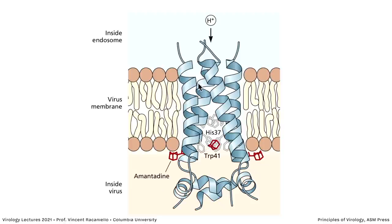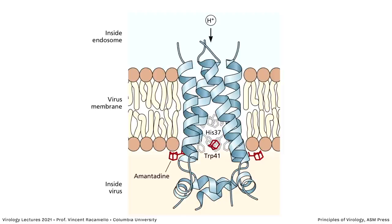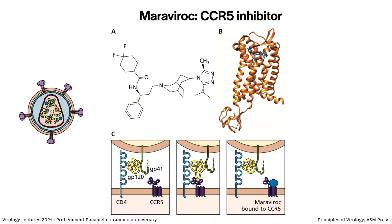The M2 channel is a tetramer, a small protein that crosses the phospholipid bilayer. Amantadine binds both outside and inside the channel, interacting with side chains of certain amino acids and blocking proton transit. Resistance arises readily — a single amino acid change is enough to either prevent amantadine from binding or still allow proton passage in its presence. That's why amantadine is no longer used. Another entry inhibitor is maraviroc for HIV-1, an inhibitor of CCR5 — the co-receptor that gp120 must bind after binding CD4 for high-affinity entry.